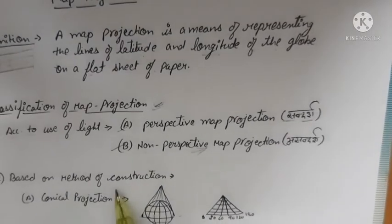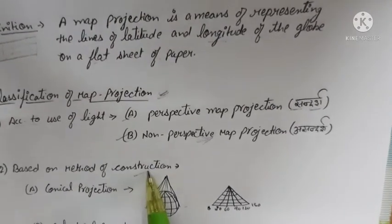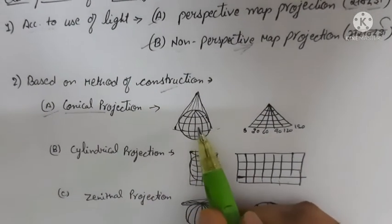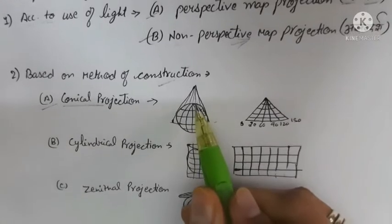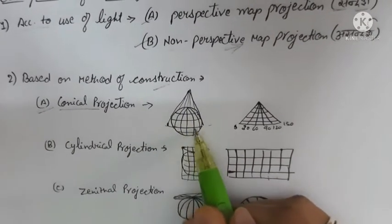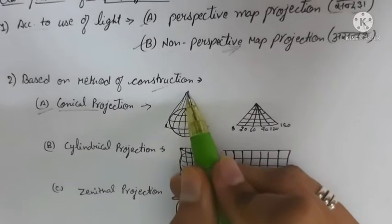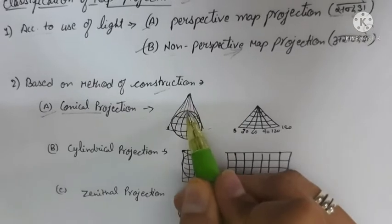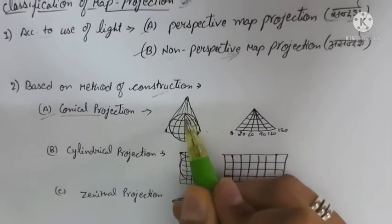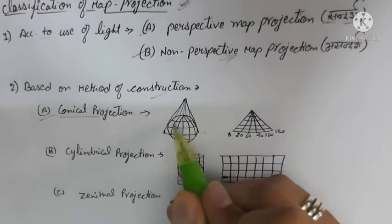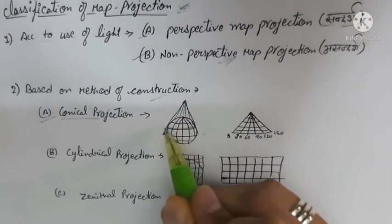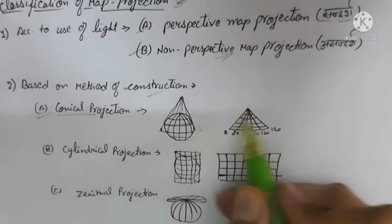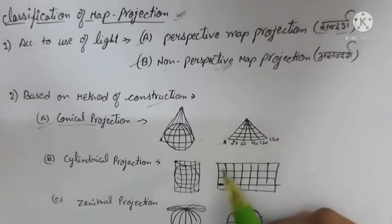Based on method of construction, we have divided into three sub-categories. First is conical projection. In conical projection, a cone is placed over the globe with the apex of the cone just above the poles, and the latitudes touch a point called the standard parallel or manak akshan shrikhah.